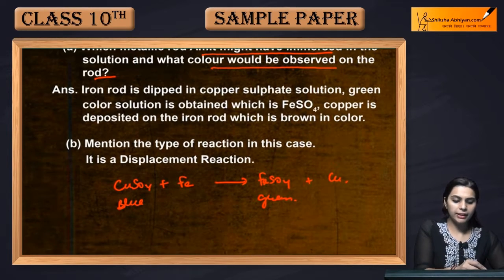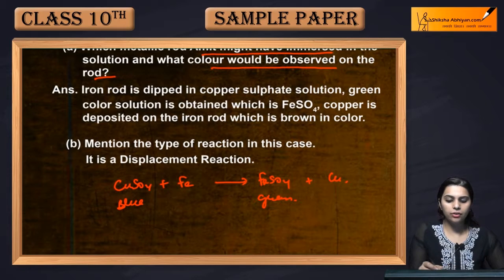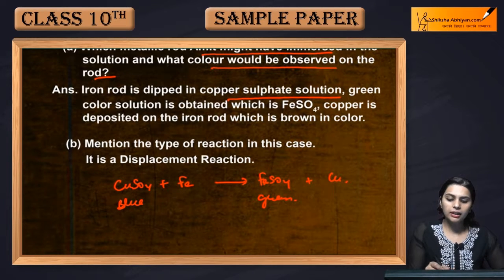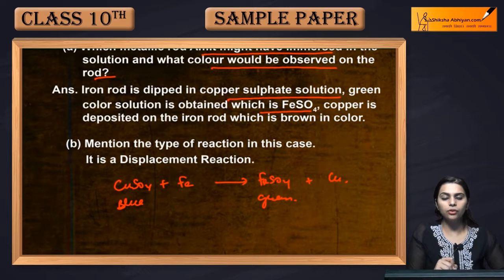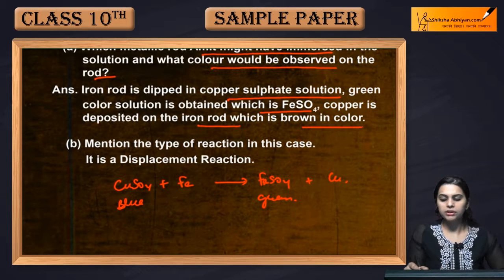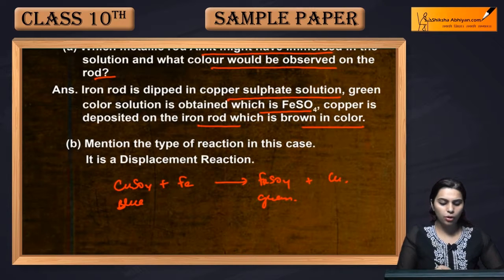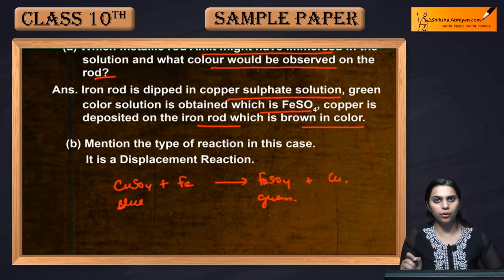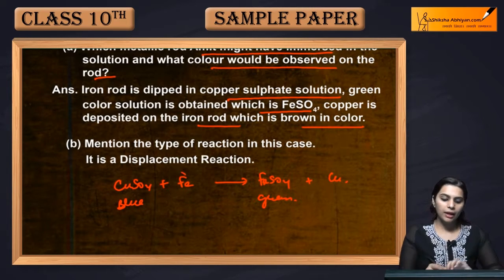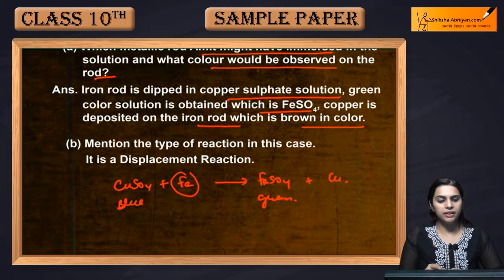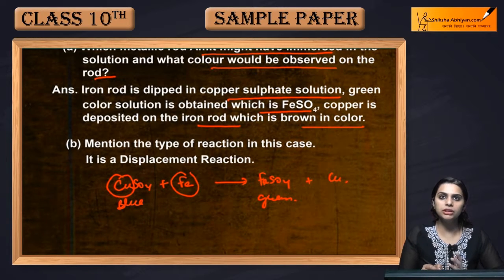So an iron metallic rod was dipped in the copper sulphate solution. A green color solution, FeSO4 (ferrous sulphate), is obtained. Copper is deposited on the iron rod, which is brown in color. The displaced copper is deposited on the iron rod. Iron is more reactive than copper, so it displaced copper.